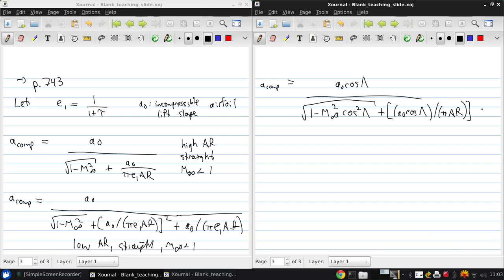And here we drop the impact of planform shape because it's very small compared to the other effects. All three of these terms are in the denominator. So this is for swept subsonic compressible flow.